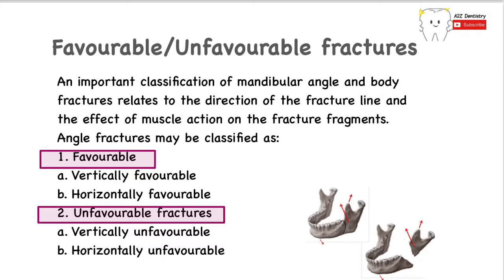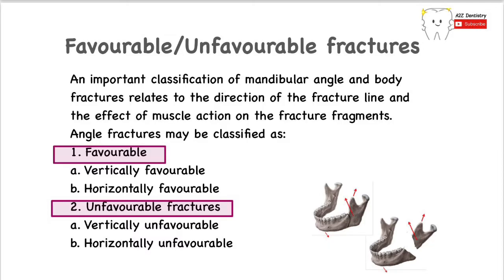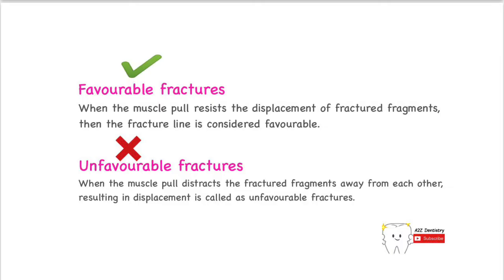These two parameters are very important. Whenever there is an impact on the mandible, the direction of the fracture line will directly influence the favorability of the fracture. Additionally, the muscles of mastication attached to the mandible exert their respective actions on the fracture fragments, which will directly affect the favorability of these fractures.